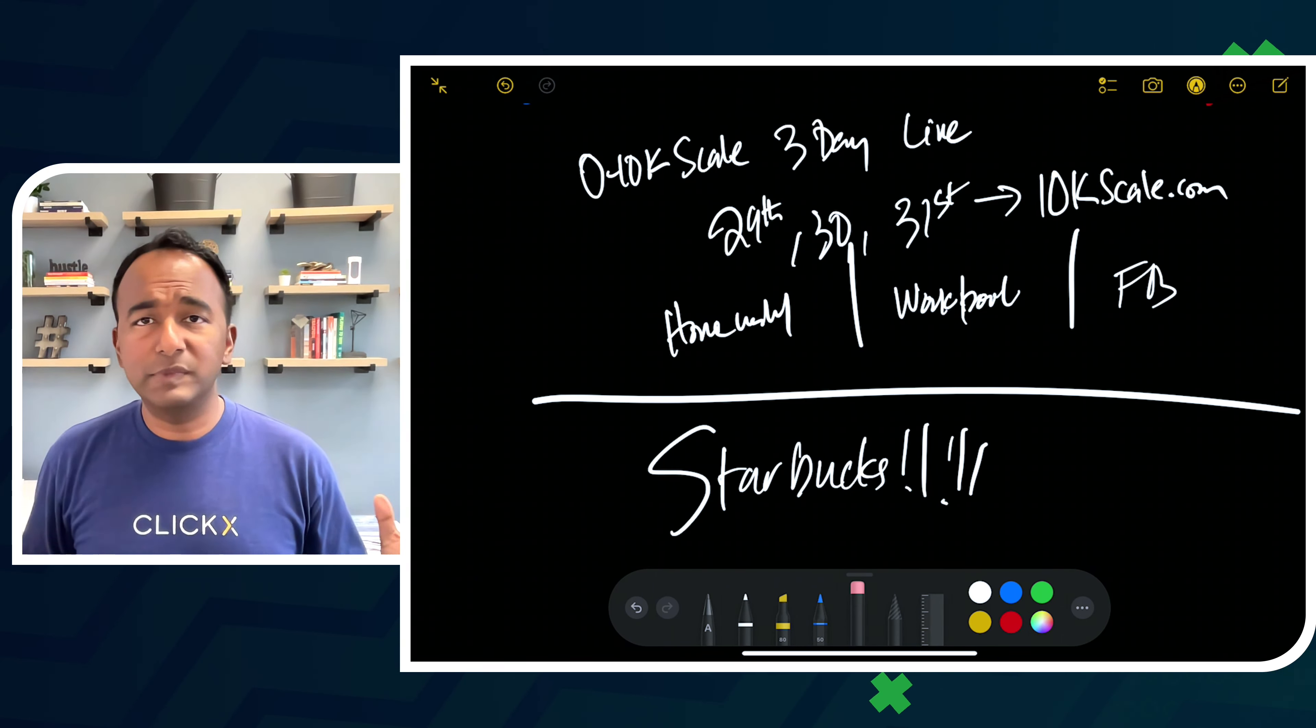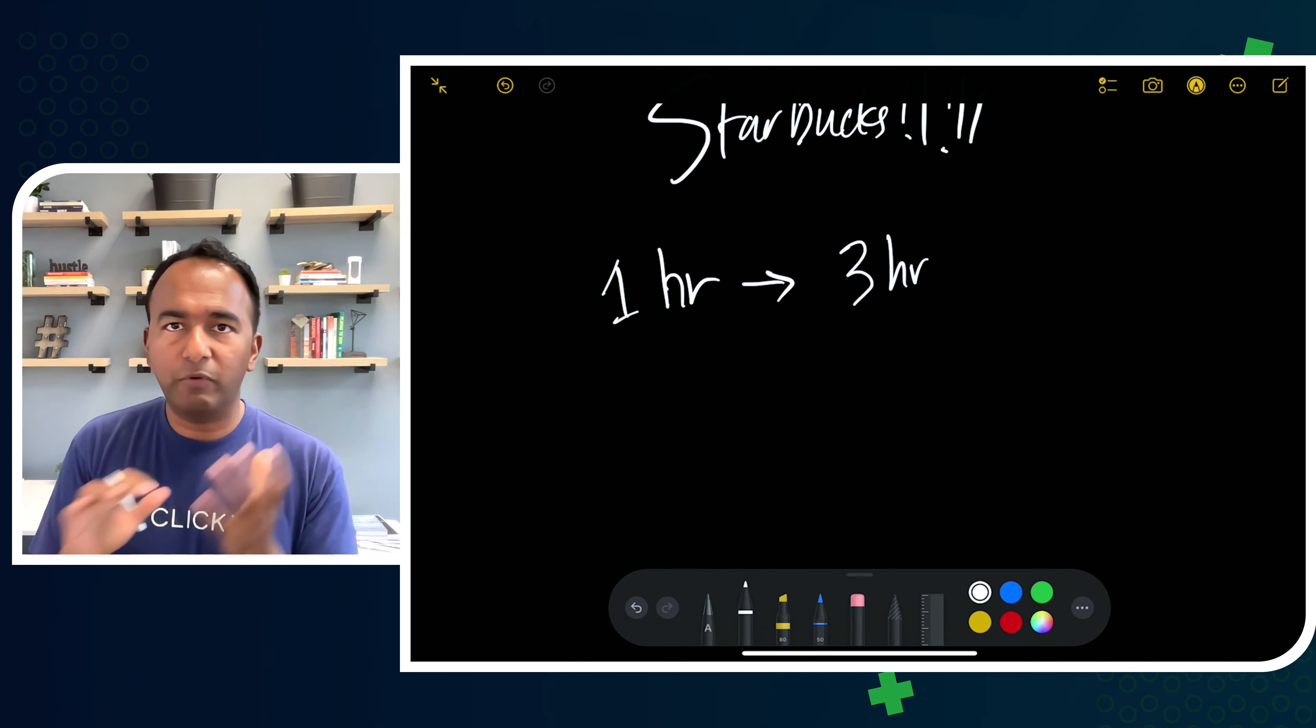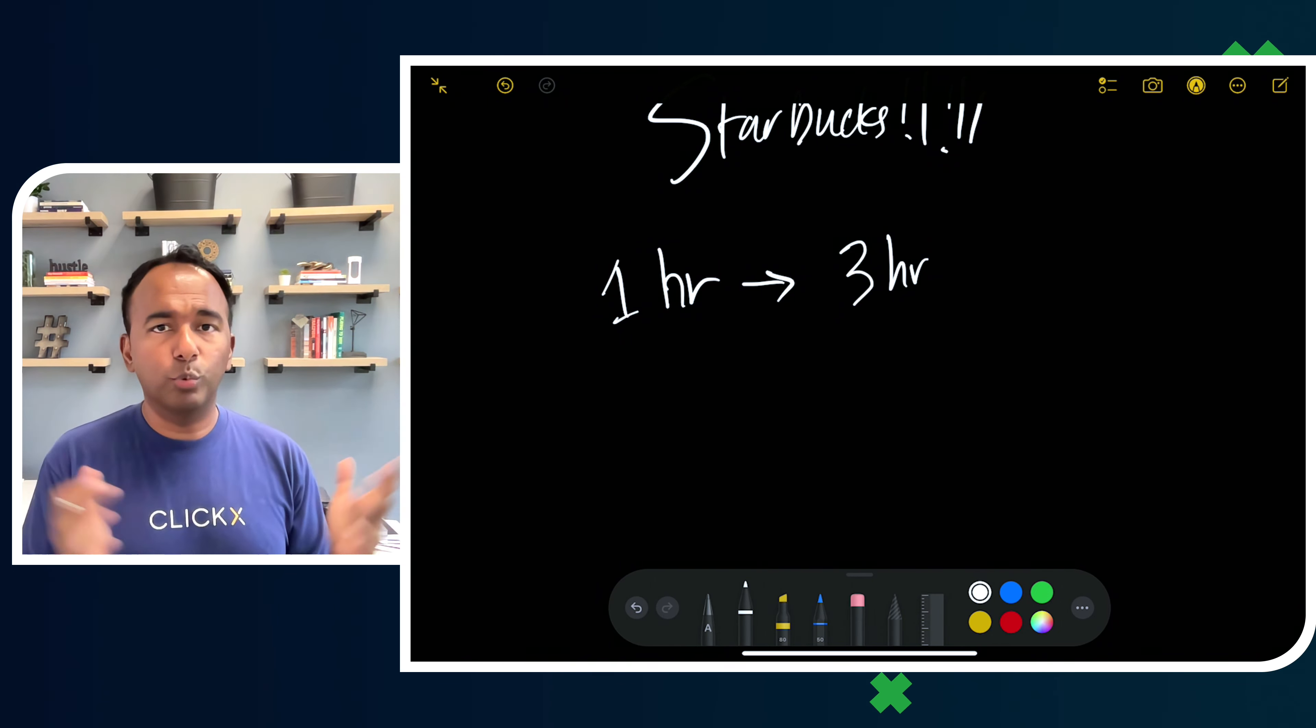We've done this five or six times now and every single time it's been paid. This time we're doing it for free. So literally you have nothing to lose. Think about it. All you have to worry about is one hour, one hour is your investment per day. Three hours between the three days. In three hours you're going to have the exact same blueprint that we teach our partners. We coach them every single day.